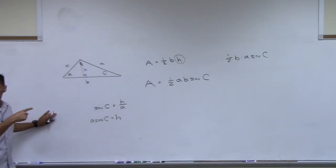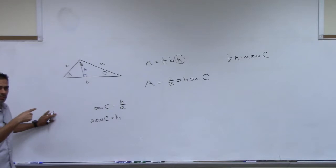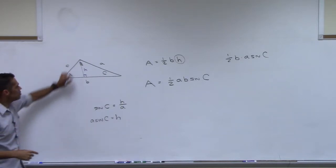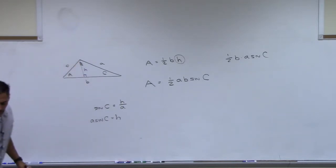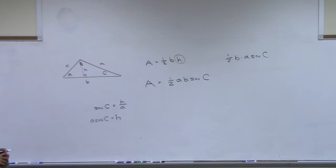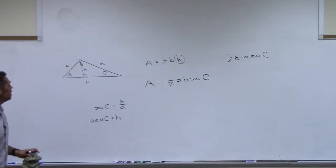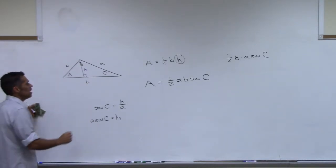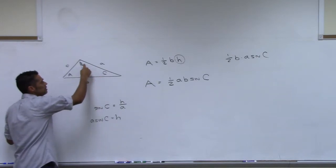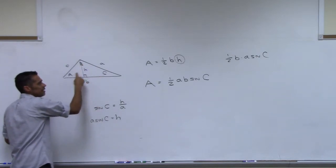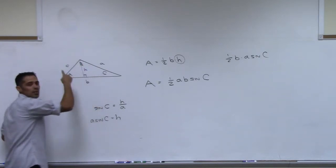This is very useful in calculus because you don't need to actually find the height. Take a look at this triangle and ask what is sine of C? It would be H over A. If you solve for H, you get H equals A sine C. Come to the area formula and replace H with A sine C, and you get one half B times A sine C, which is one half AB sine C — which is this formula. It works.